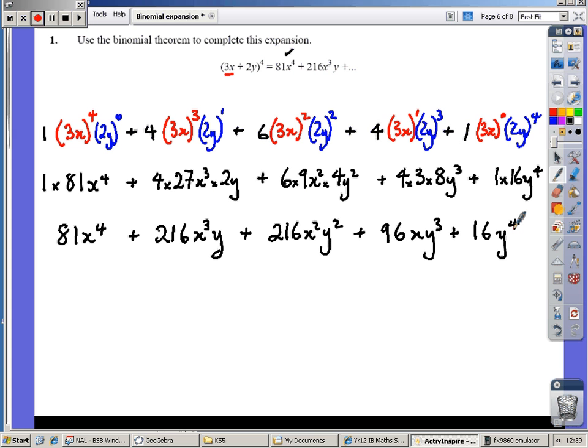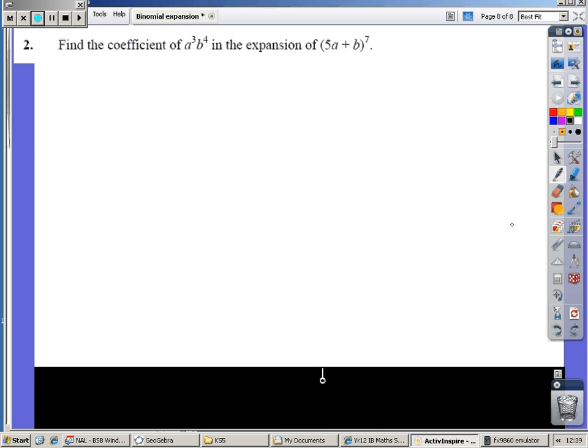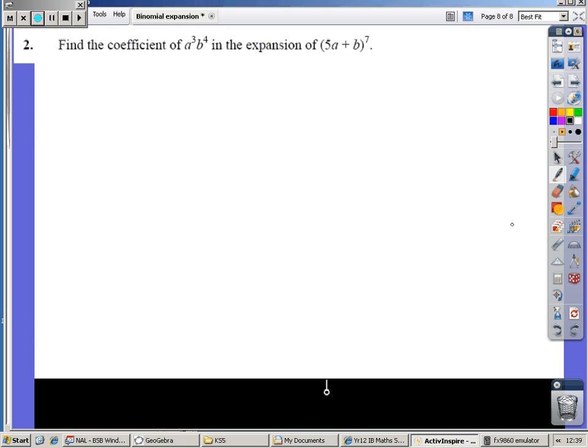Of course, we don't always have to do all the expansion, and quite often we may well find that we are being asked to create part of the expansion rather than all of it. For example, this question. Here we have 5a plus b to the power 7. Now we know, when we create the expansion for this, that there will be three elements: a coefficient, a power of 5a (the a in this case), and the power of b. We know that we are after an a cubed and a b to the 4. To do this, we must have the 5a cubed and the b to the power of 4. Notice 3 and 4, that's the 7, the total power again.